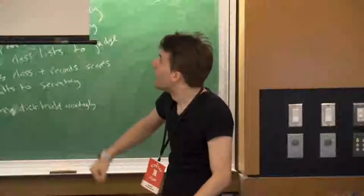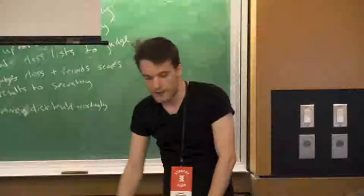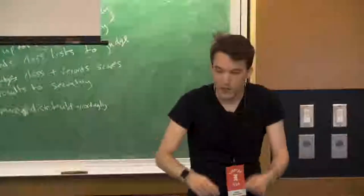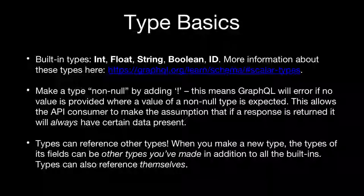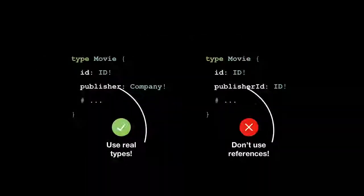GraphQL comes with a handful of built-in types: integers, floats, strings, booleans, and IDs. You can define your own types as demonstrated. These built-in types are called scalar types — they don't have other fields and you can't expand them. You can make a non-null type by adding the bang at the end. Types can also reference other types — a movie can have similar movies, making it self-referential. And you can reference other things you've defined in your schema.